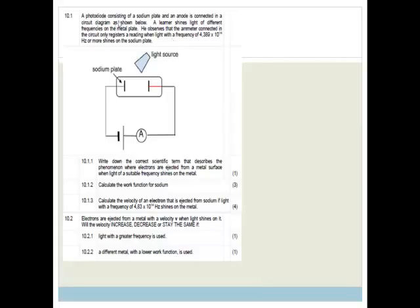It says, a photodiode consisting of a sodium plate and an anode is connected in a circuit diagram as shown below. The learner shines light of different frequencies onto the metal plates. He observes that the ammeter connected to the circuit only registered reading when light of a frequency of 4.389 times 10 to the 14 hertz or more shines on the sodium plate. Now it says, write down the correct scientific term that describes the phenomena where electrons are ejected from a metal surface when light of a suitable frequency shines on the metal. And that is photoelectric effect.